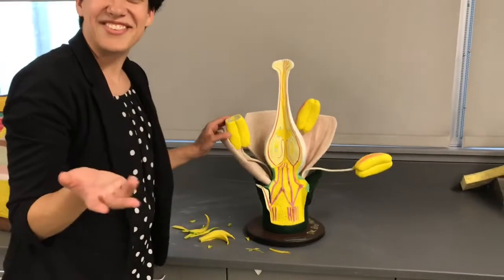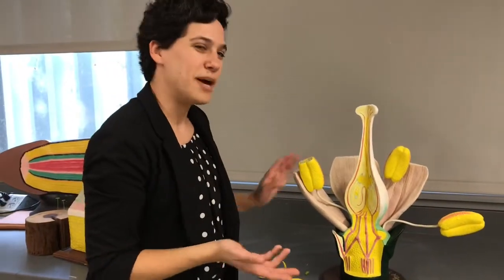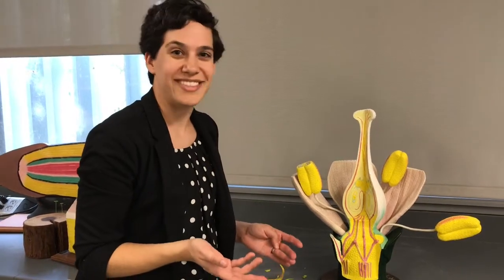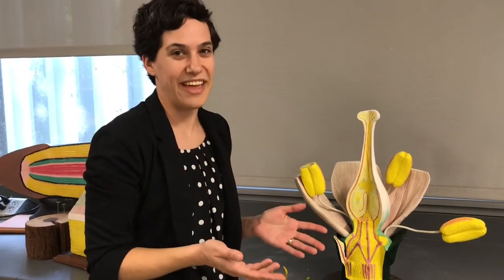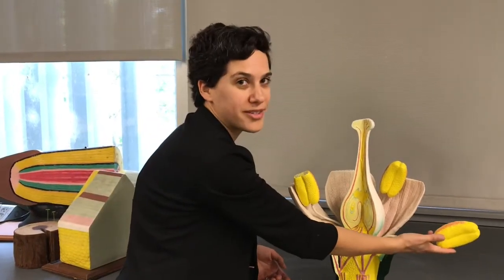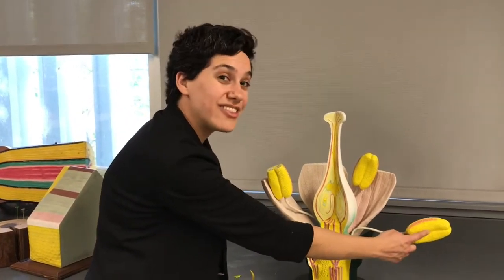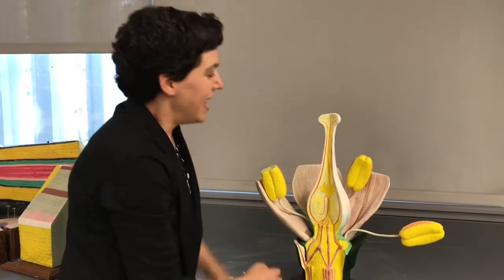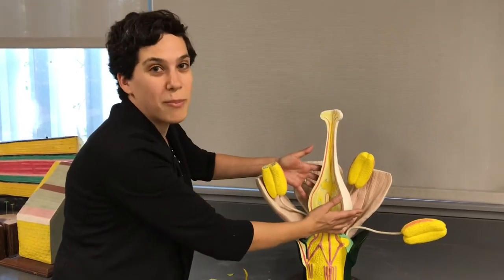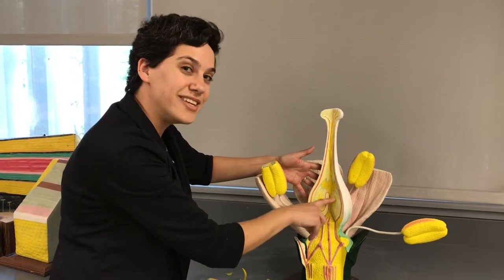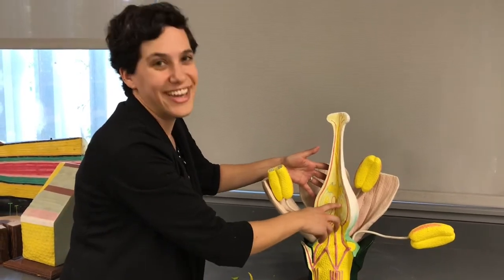One other thing that's really interesting about flowers is that most of the flowers you see, we say are hermaphrodites. And that means they have both male and female parts. The stamen is the male part, because the pollen inside the anthers has sperm in it. And the carpels are the female parts, because the ovules inside the ovaries have the eggs inside.